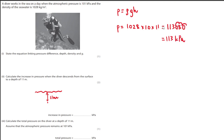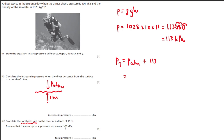Calculate the total pressure at a depth of 11 meters. It's asking you to find total pressure, meaning this time we need to take into account atmospheric pressure as well. So P total would be atmospheric pressure plus the pressure underwater, which is 113 kilopascal. Your atmospheric pressure is 101, plus 113, giving 214 kilopascals.